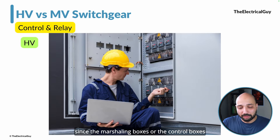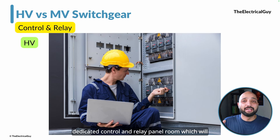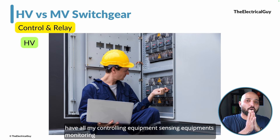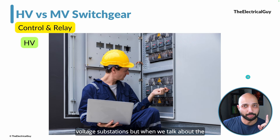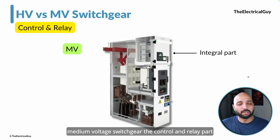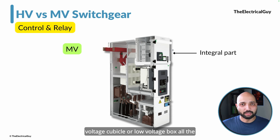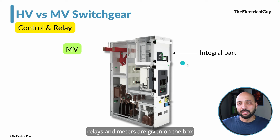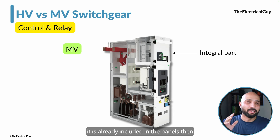In a high voltage AIS substation, since each device has a separate marshaling box, we need a dedicated control and relay panel room that contains all controlling, sensing, and monitoring devices. This is a requirement for high voltage substations. But in medium voltage switchgear, the control and relay part is an integral part of the panel — fitted inside the low voltage cubicle. All relays and meters are placed inside that box, so you don't need a dedicated control and relay room.